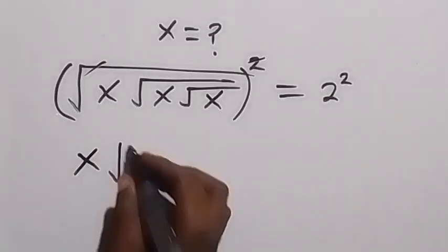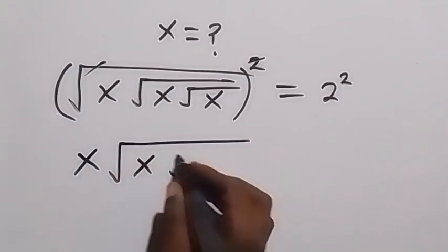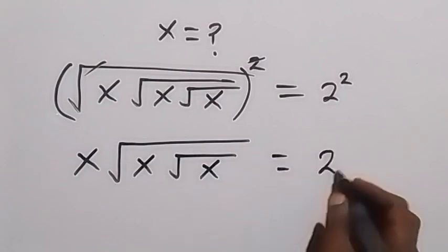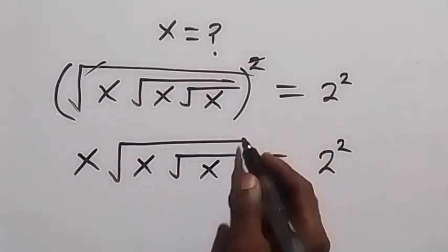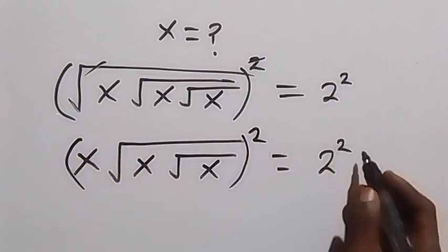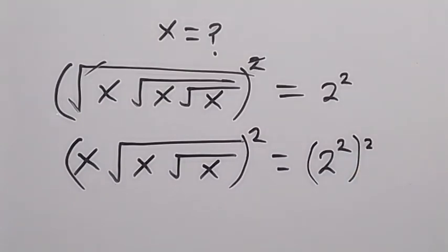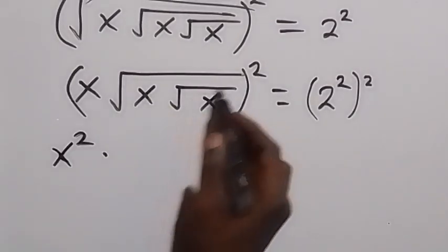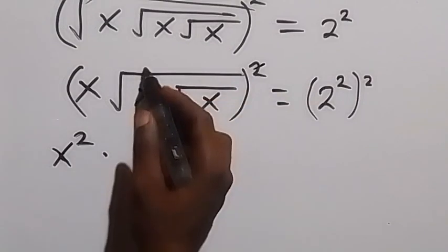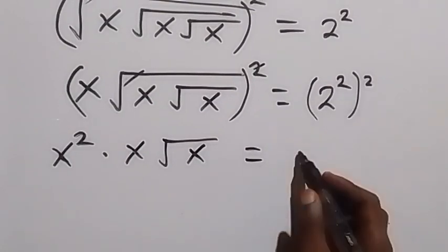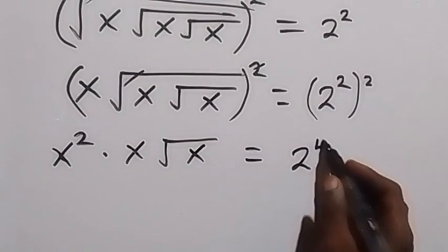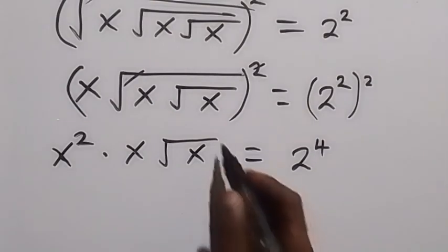From here we can repeat the process and square both sides again. We square this side and also this side. This square affects x — we have x squared — then it affects root x, and the square cancels the square root. We have x root x root x equals 2 squared. Let's write the right side as 2 raised to power 4 as the powers multiply.